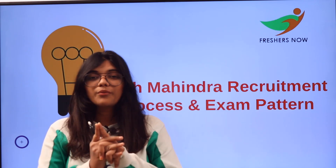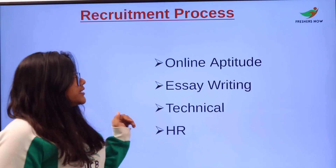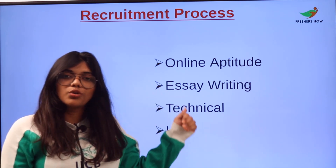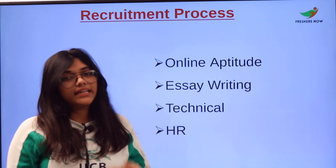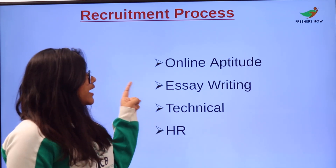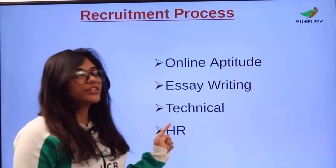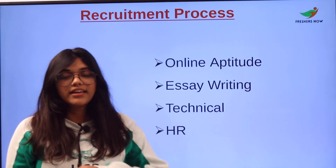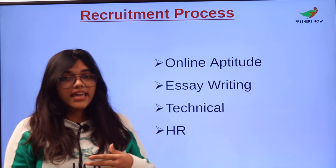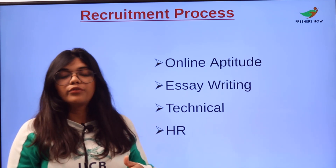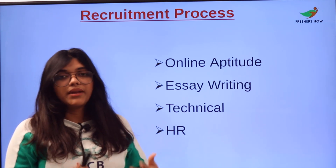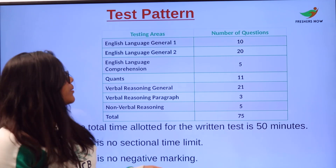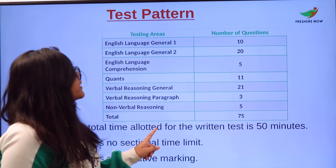Stick on to the end of the video so that you will know very detailed information. The exam will be conducted under four sections, and you have to go through all four to get a job in Tech Mahindra. Number one is online aptitude, number two is essay writing, number three is technical round, and number four is the HR interview round. There is no escape — you have to take up all four rounds to get a placement in Tech Mahindra.